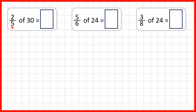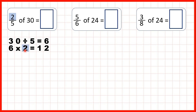So first we have 2 fifths of 30. We can start by dividing by the denominator, so dividing 30 by 5. That gives us 6. And then we can take that 6 and multiply it by the numerator, so times top. And 6 times 2 is 12, so that's our answer.